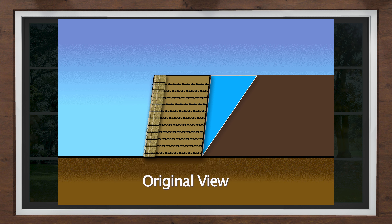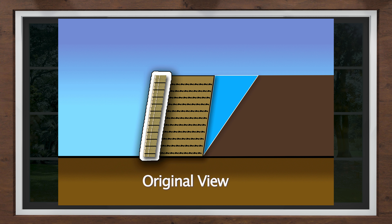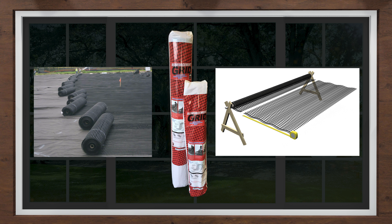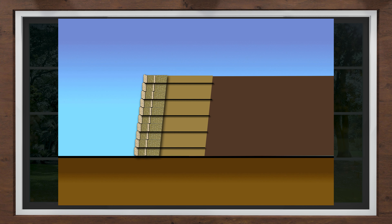The reinforced soil mass becomes the structure and the Allen Block wall becomes the facing. Geogrids are synthetic meshes which are manufactured specifically for slope stabilization and earth retention. These grids are available in a variety of materials, sizes, and strengths. By increasing the length of the geogrid in the wall, you increase the mass of the structure and therefore can build taller walls.